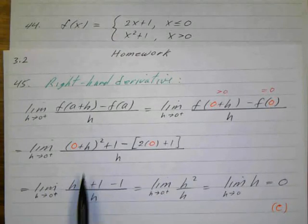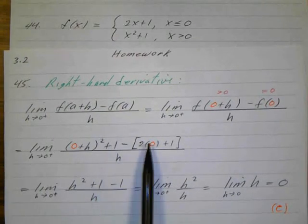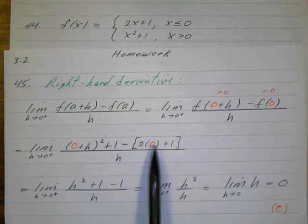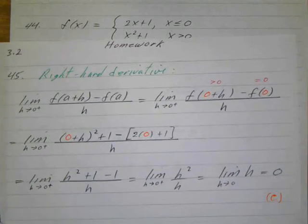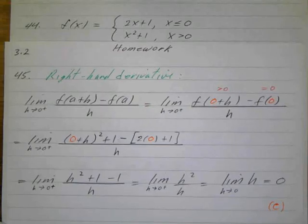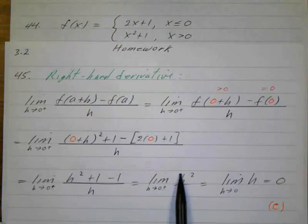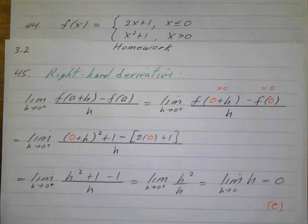But if I simplify this, this is going to be just h squared plus 1. Minus, and then 2 times 0 is 0, plus 1 is just 1, so minus 1. So those cancel, so I have h squared over h, but one of those cancel. I don't have to worry if it becomes 1, h over h, which is 1. So I just have the limit as h approaches 0 of h, which is 0. So that was letter C.